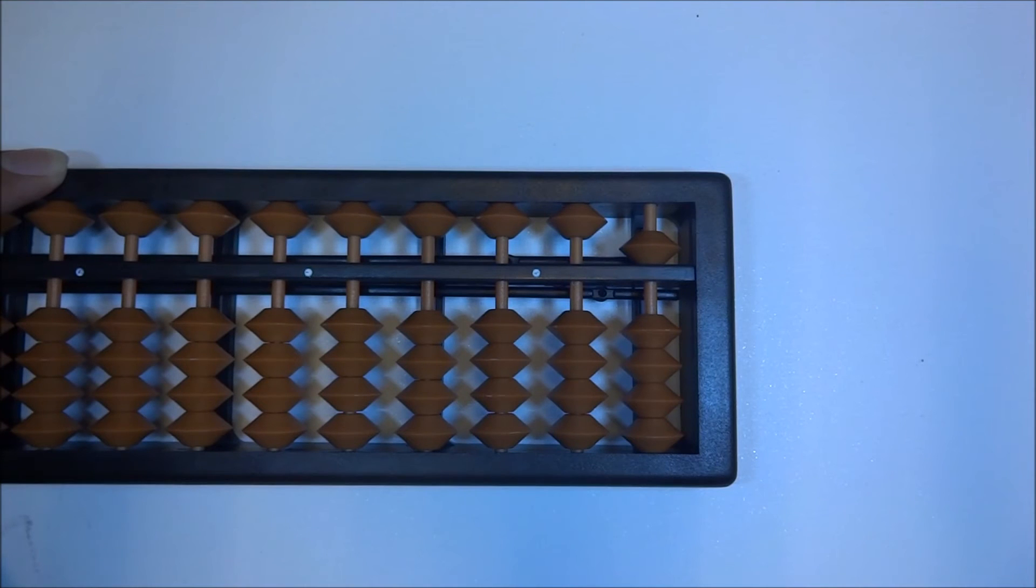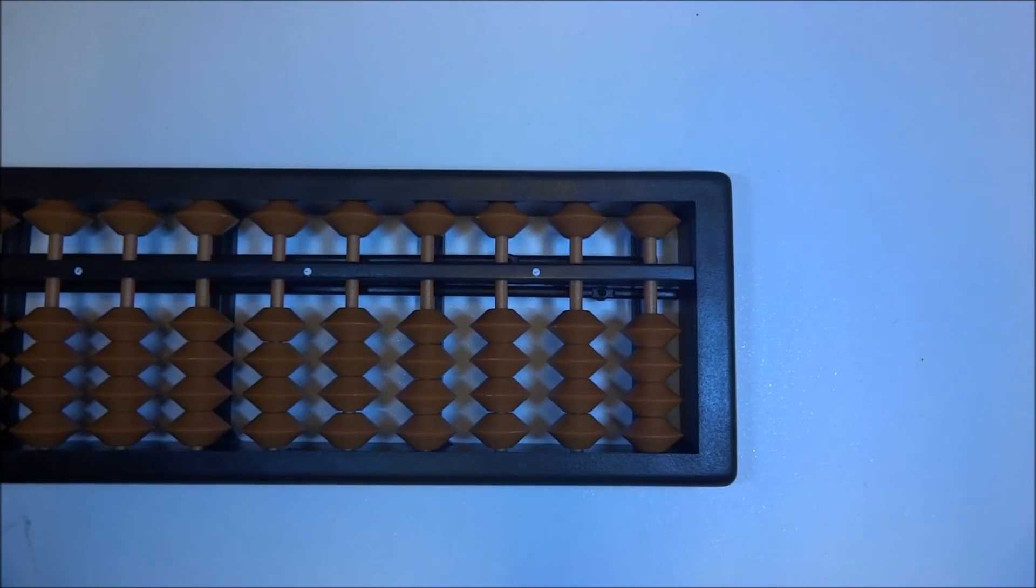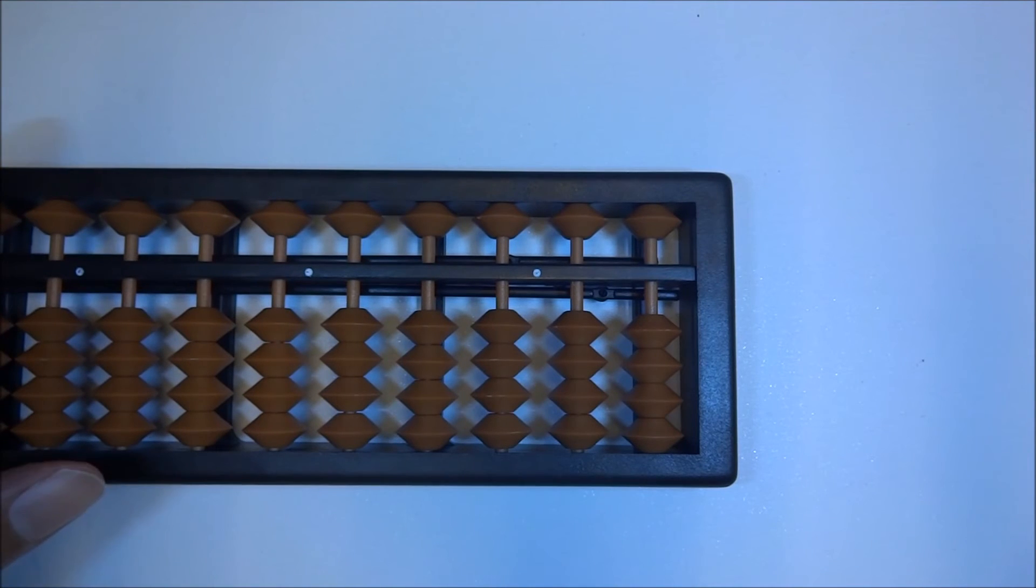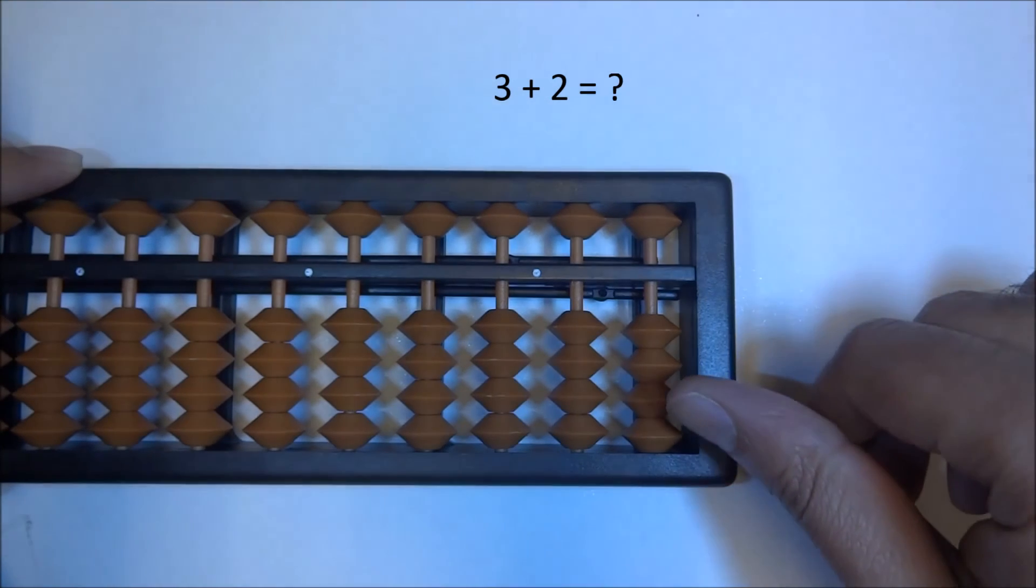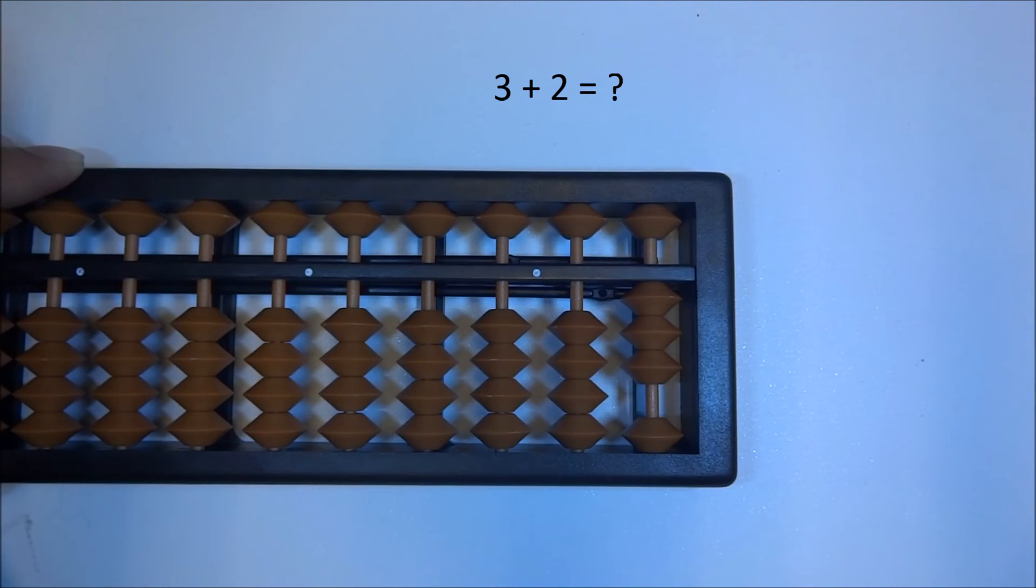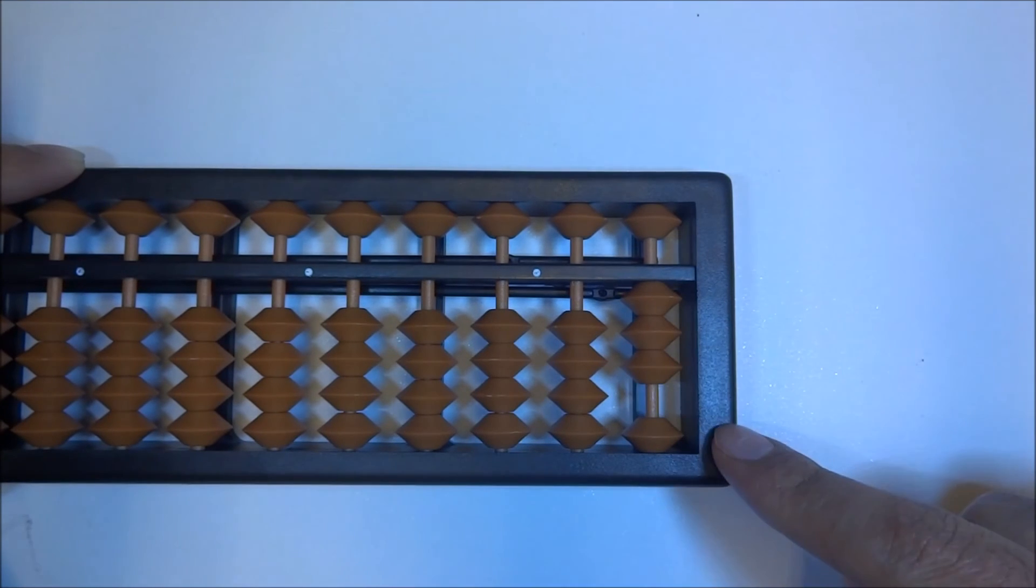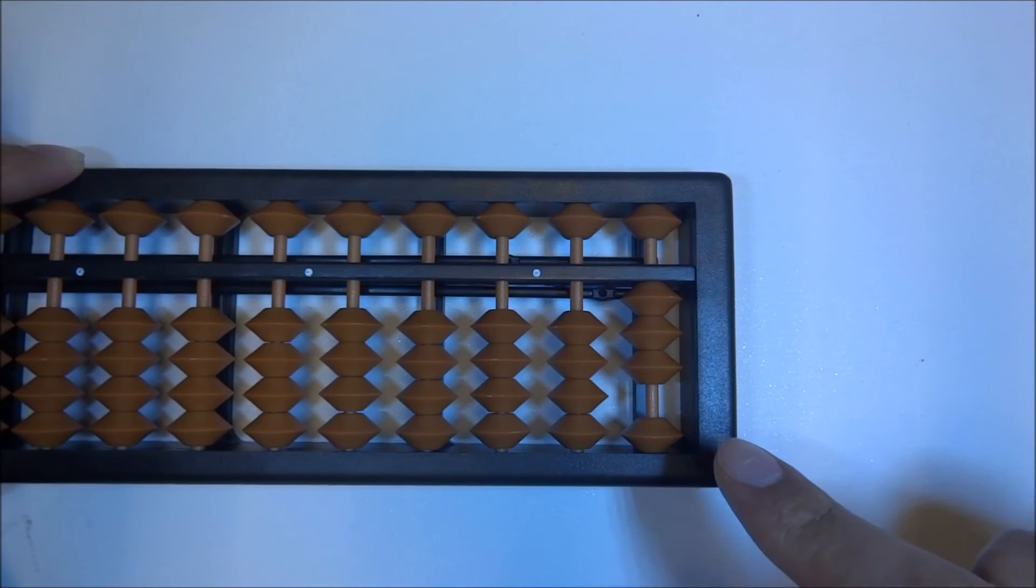Let's go ahead and reset it. Let's go ahead and try another example. Something very simple. Let's move up 3. And now we want to add 2. So 3 plus 2. But wait a minute, we are in the same situation as our previous problem. We don't have enough earthly beads. 3 plus 2, but we only have 1. So what are we going to do? We're going to find a little friend of 2.